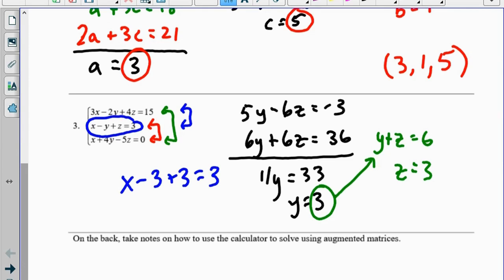So x minus 3 plus 3 means x equals 3. And so it looks like all of the variables equal 3 in this problem.